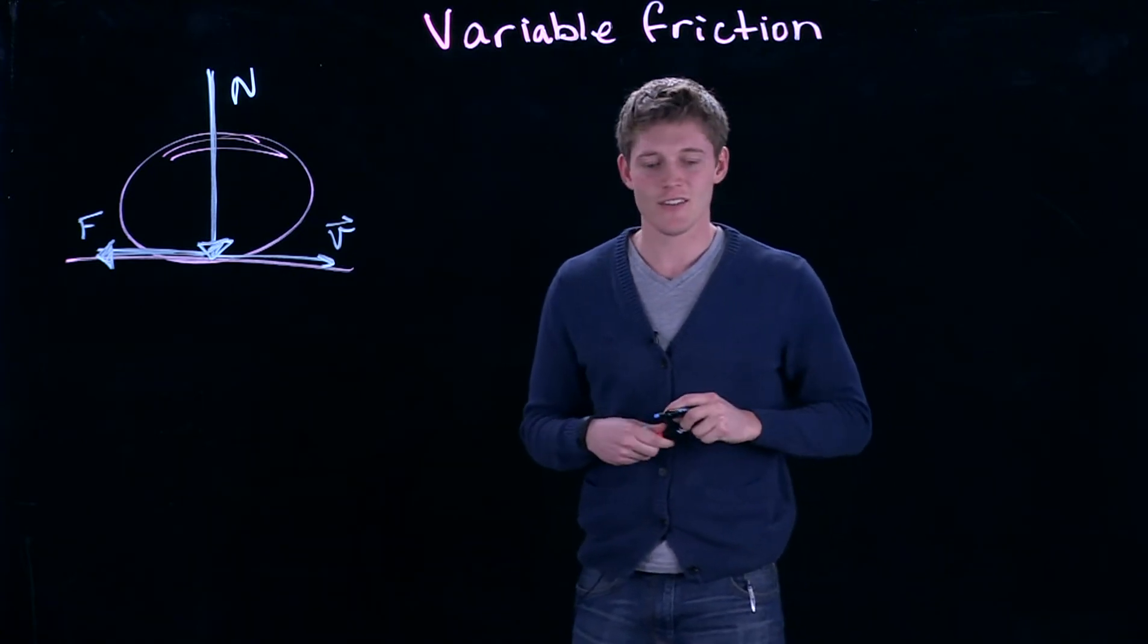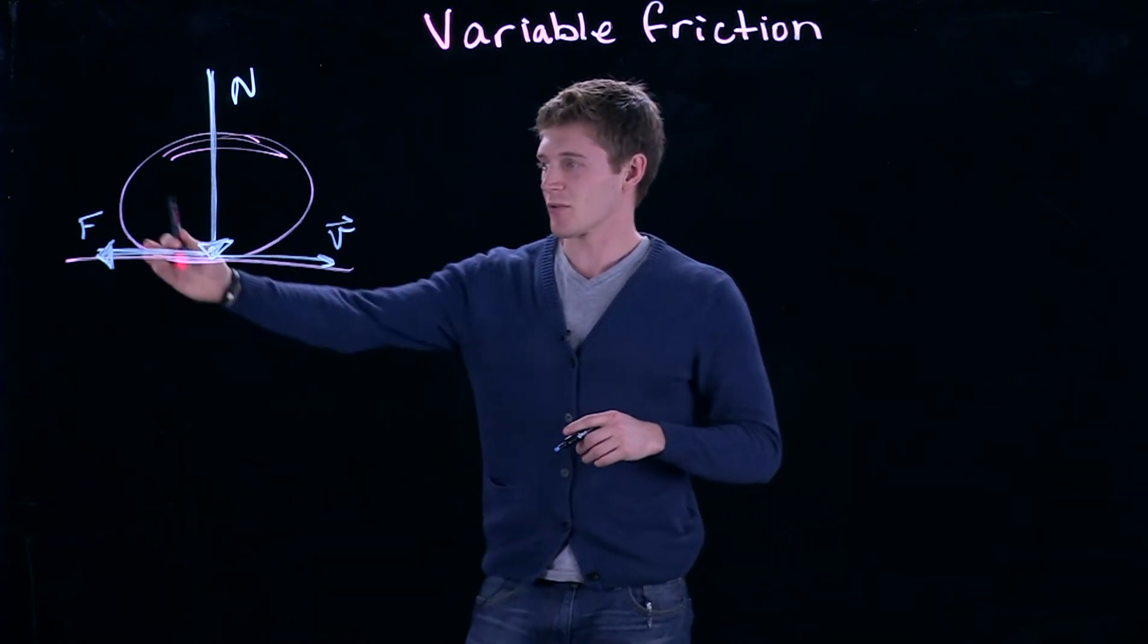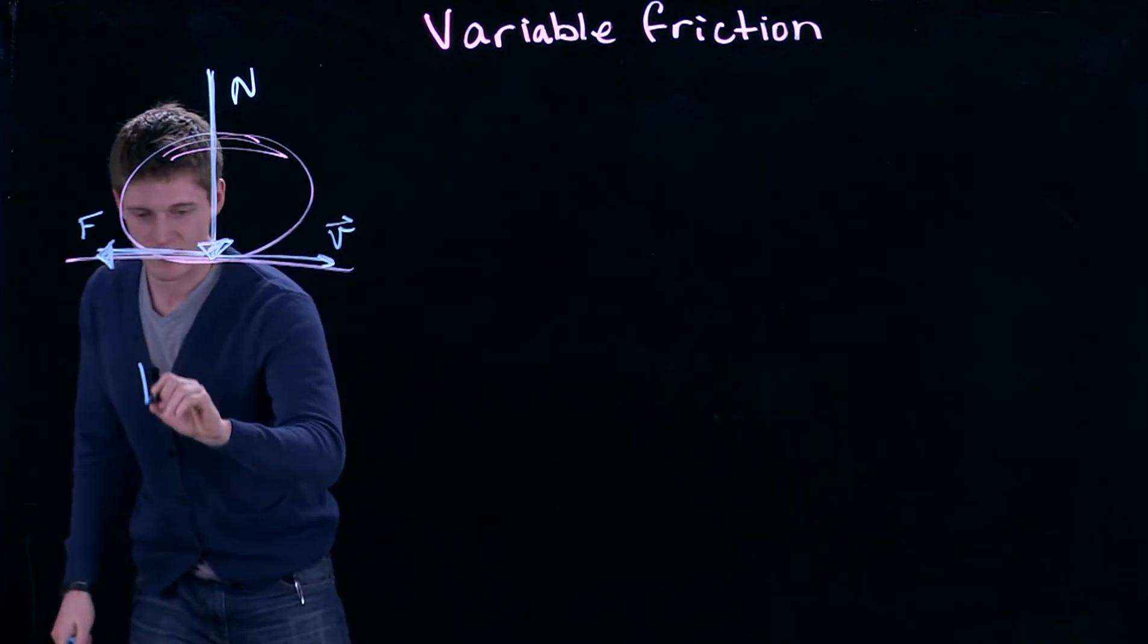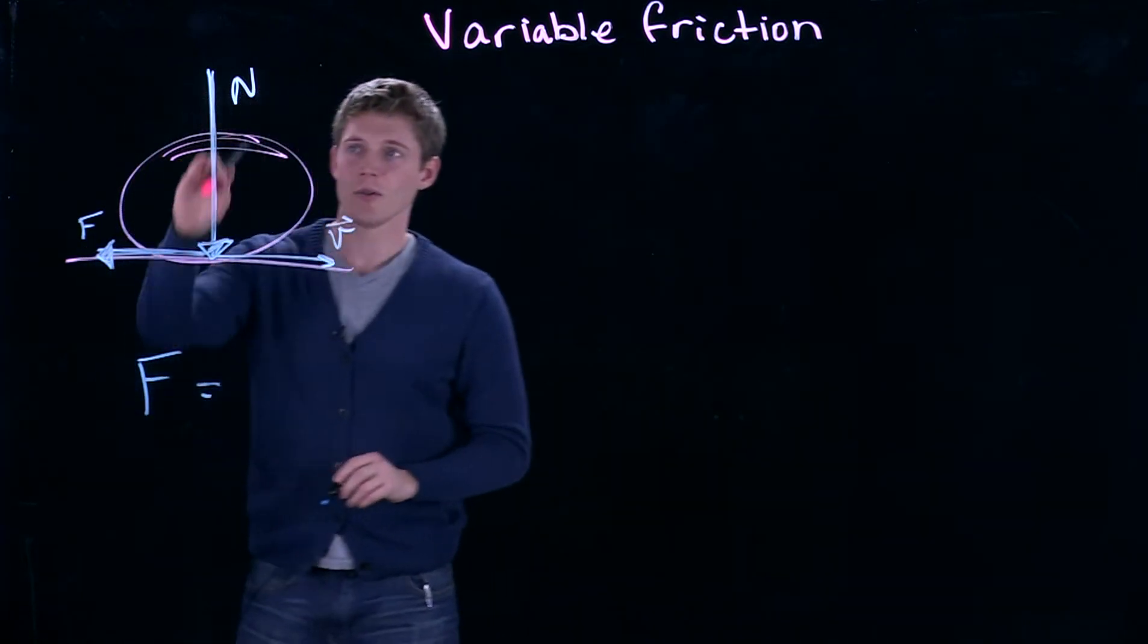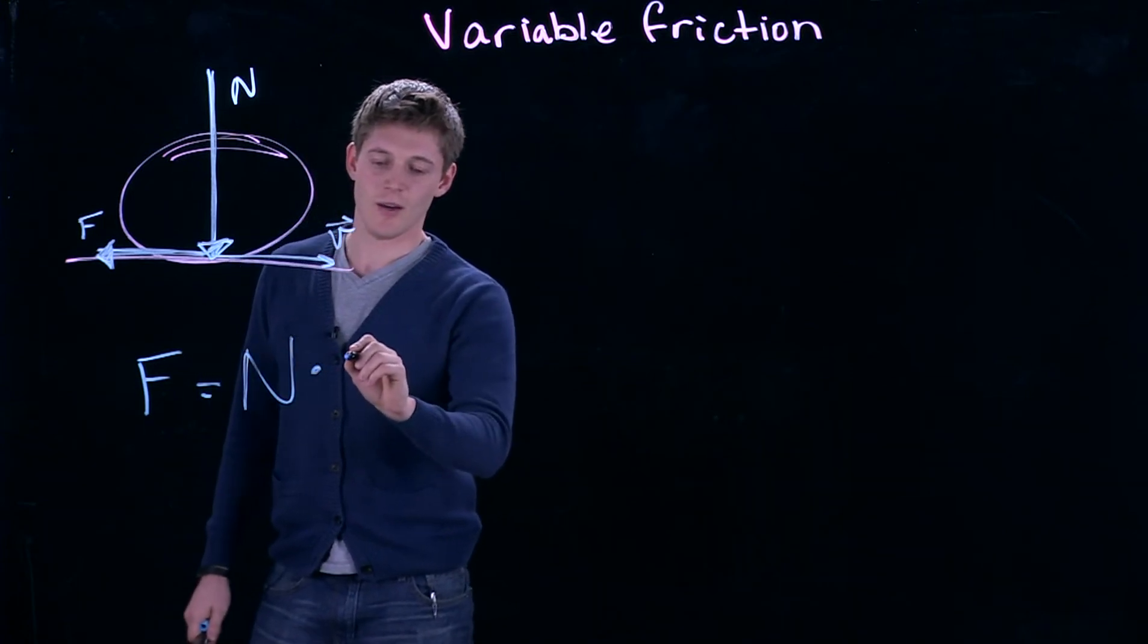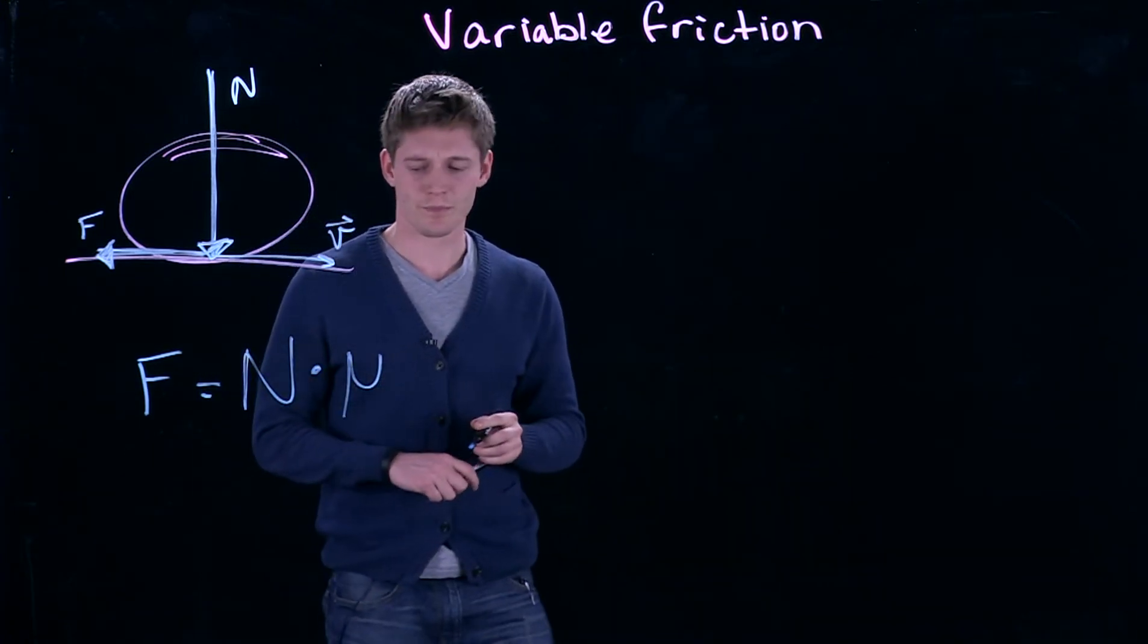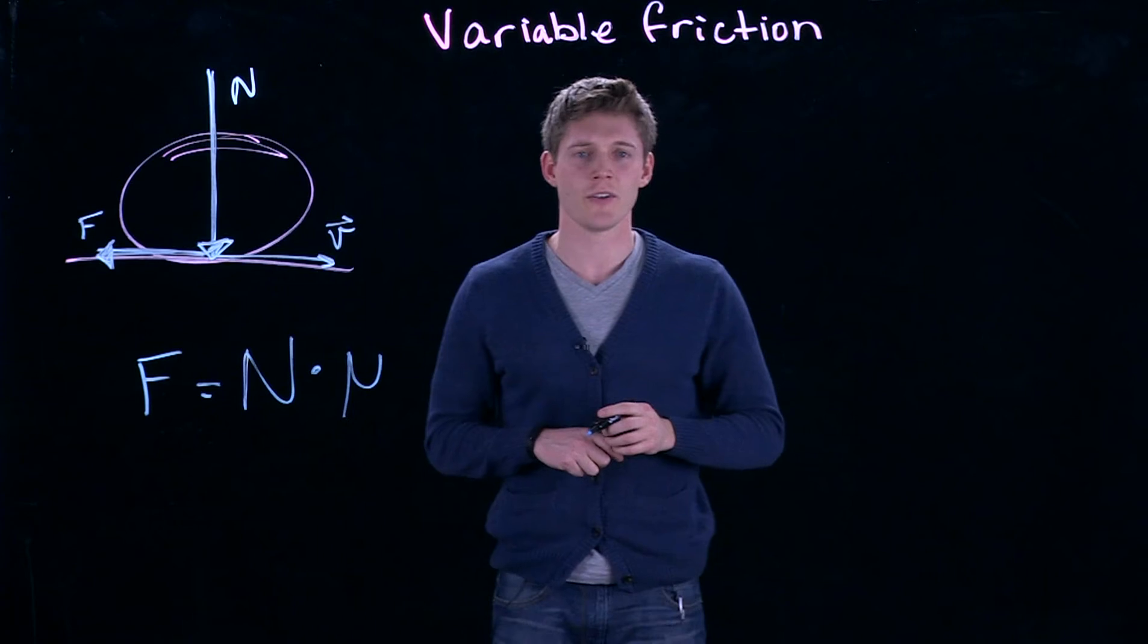And what that law says is that this resistance force, F, is equal to the normal force, N, times some coefficient, μ. This μ is called the coefficient of friction,